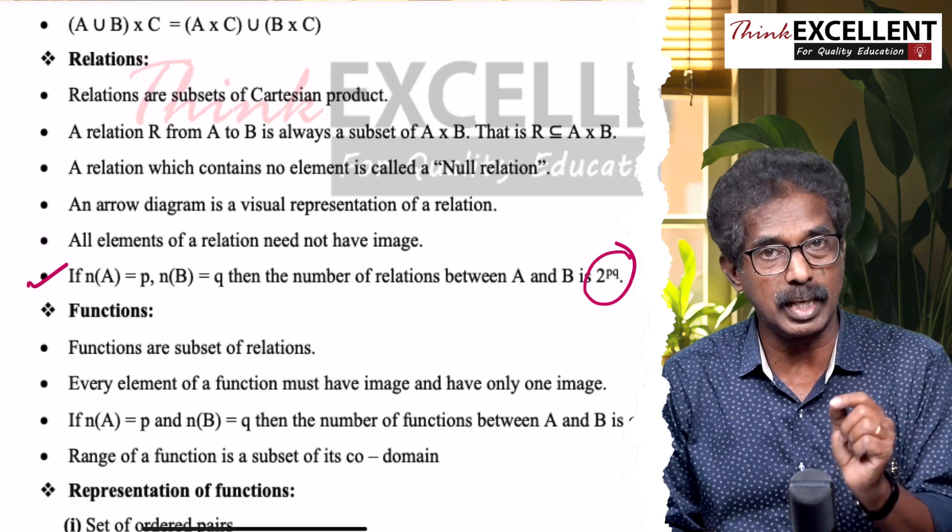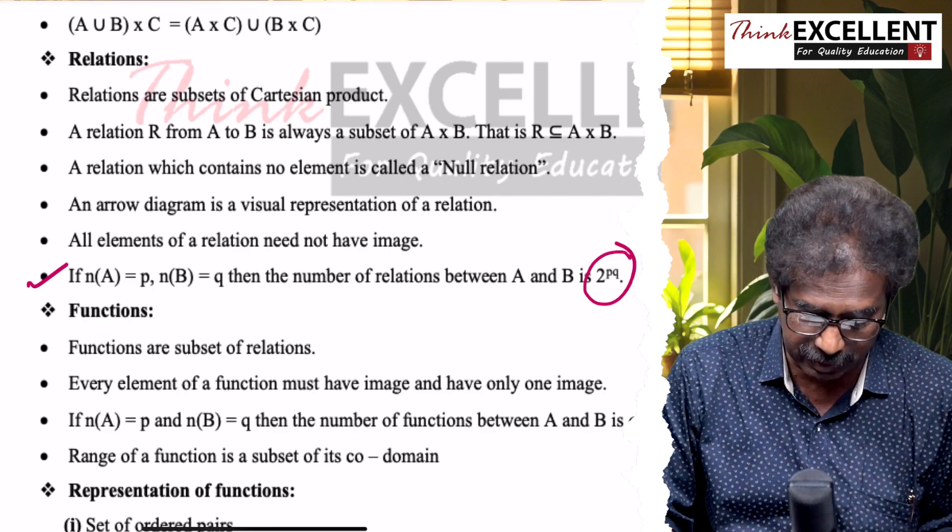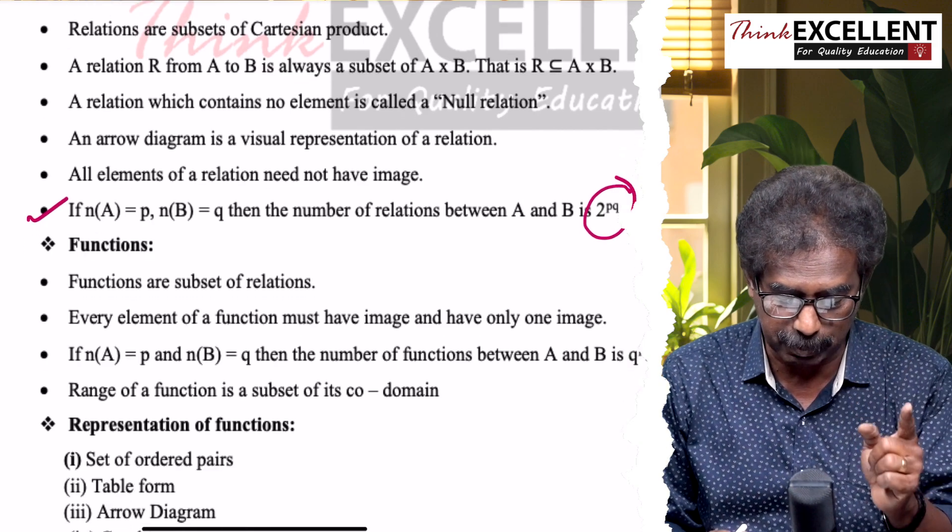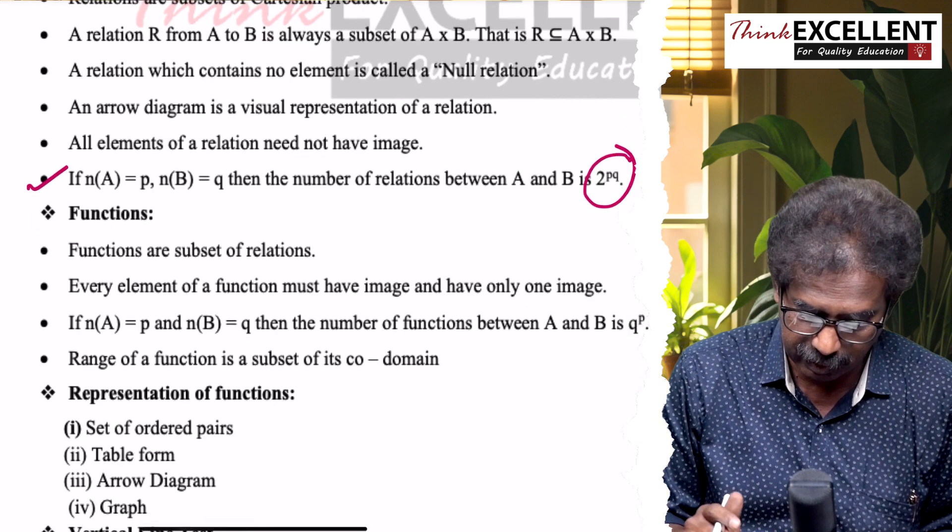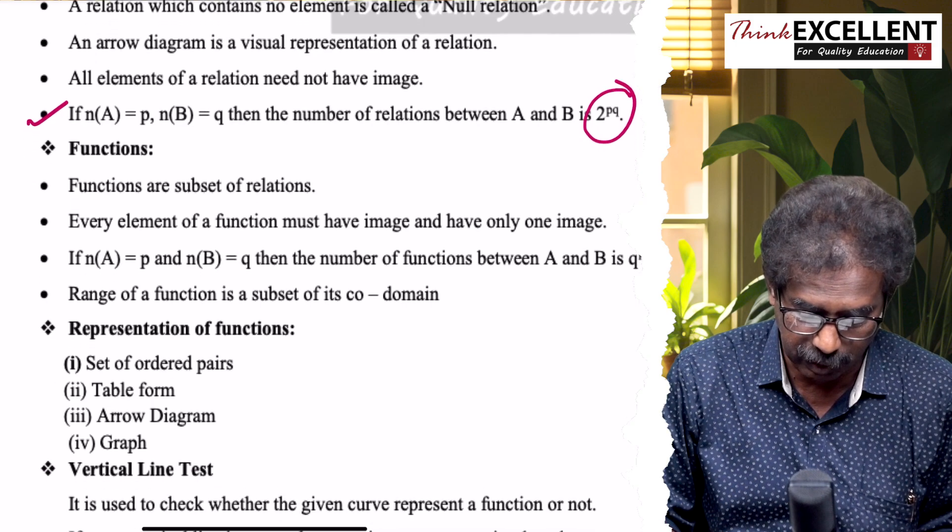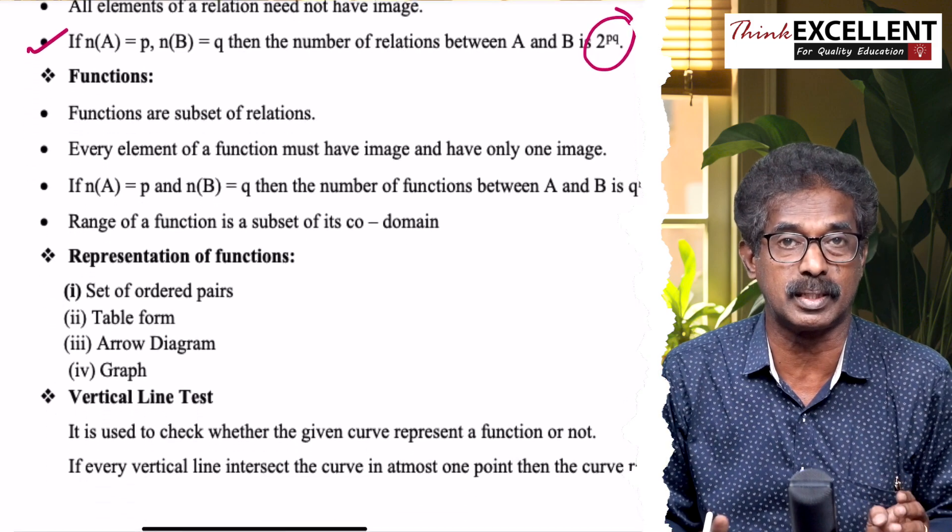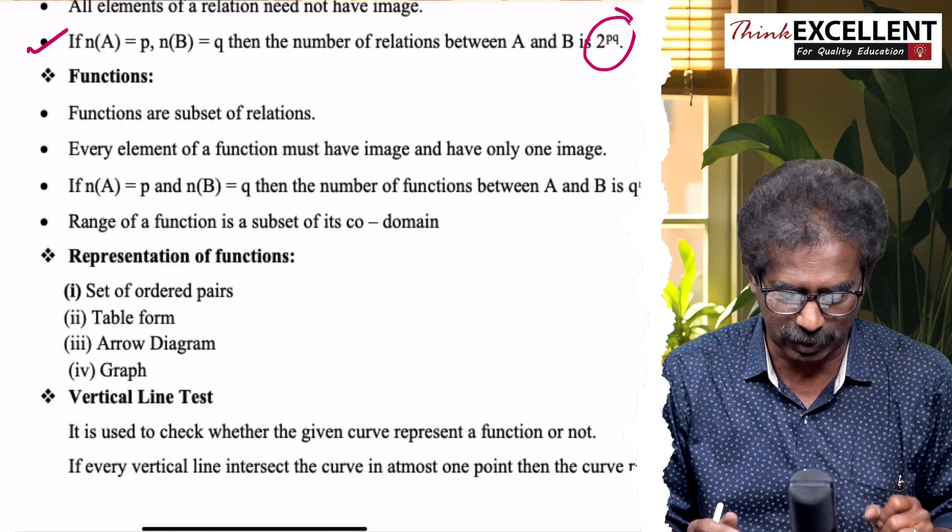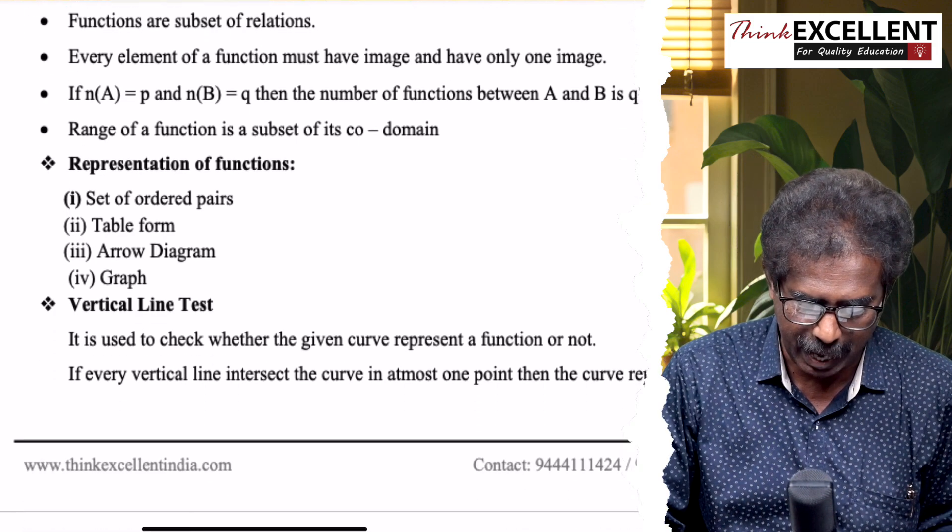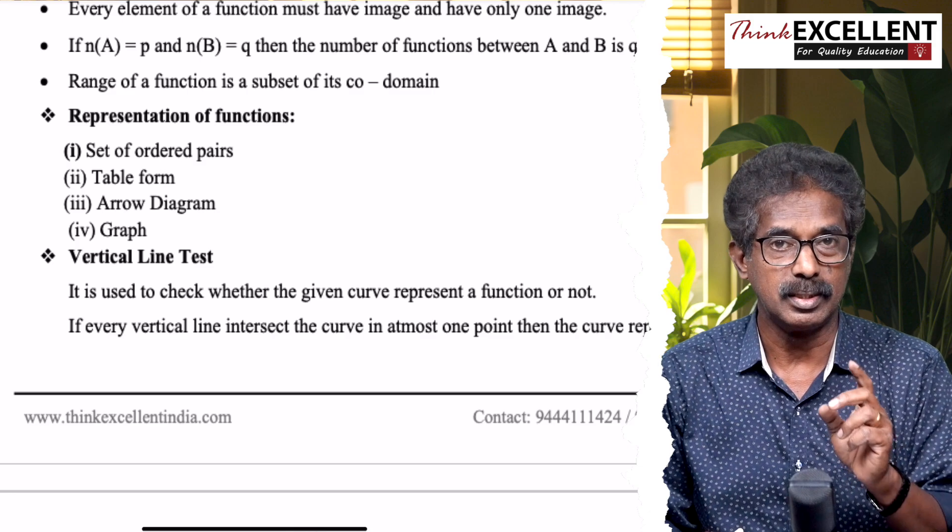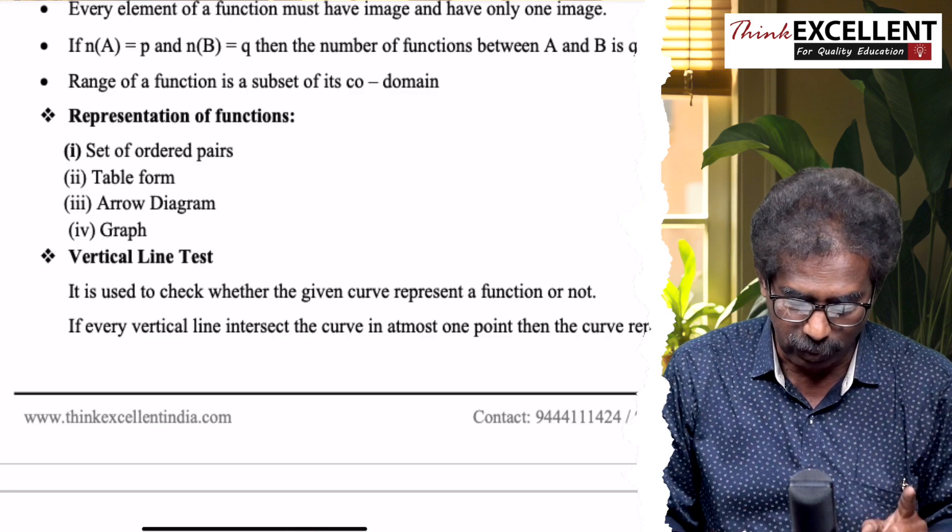Number of elements in A is p, number of elements in B is q. Then the number of relations between A and B is 2 power pq. That is very important. Then, function. It is a relation that has to satisfy the conditions. So function is a subset of relation. Then representation of function.